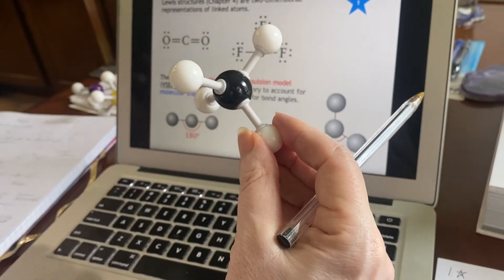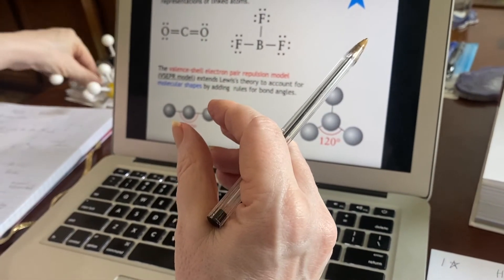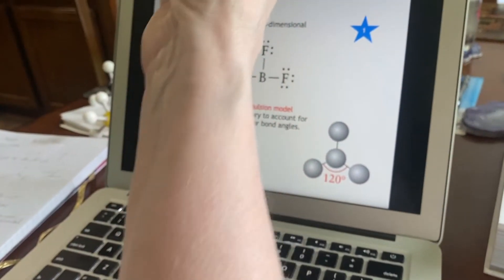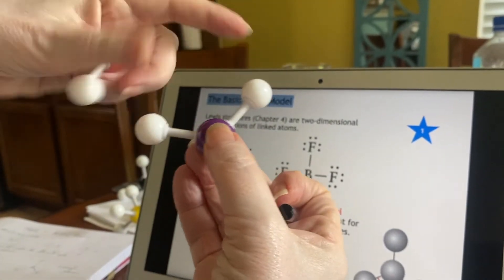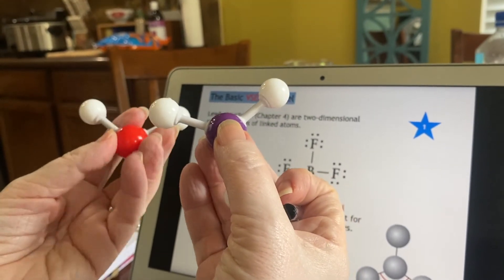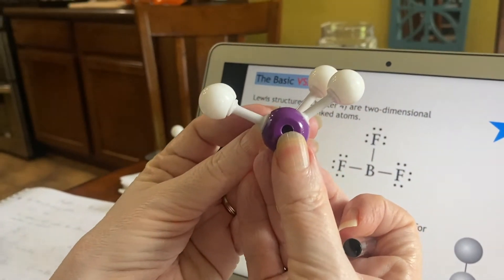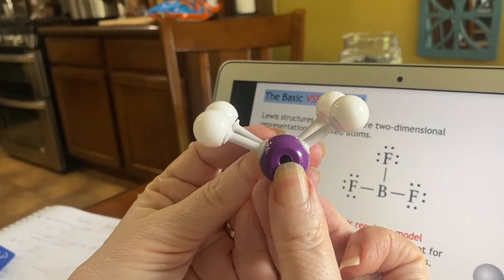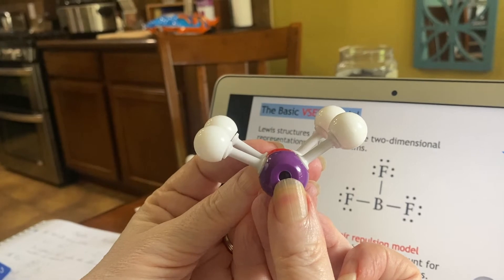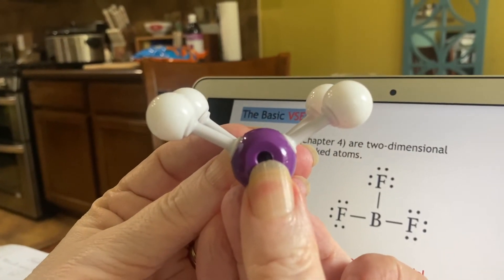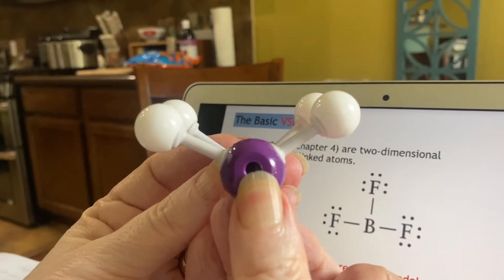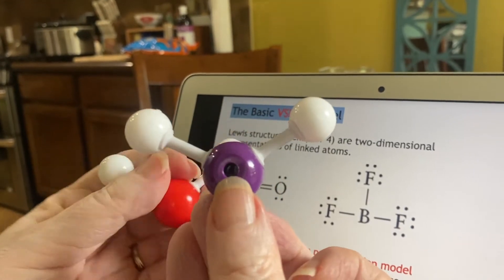Now, I don't know if this model kit is quite good enough to show this, but I'll give it a try. These are at 120 degrees. This, I'm saying, should be less than 120 degrees. Is it lined up? Oh, yeah, it is less than 120 degrees, right? Okay, good, because it should be around 109.